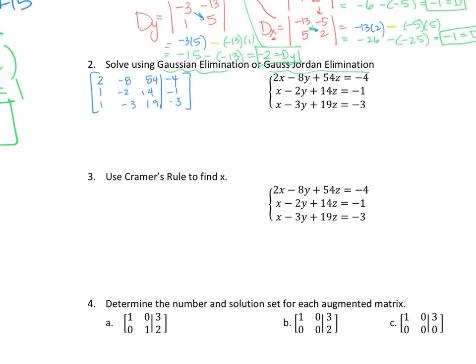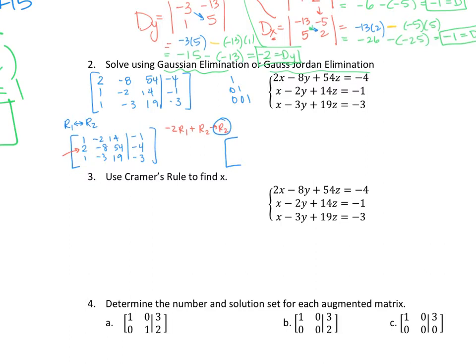My first goal is a diagonal of 1's with 0's below. I'll interchange row 1 and row 2, giving: 1, negative 2, 14, negative 1 in row 1; 2, negative 8, 54, negative 4 in row 2; and row 3 stays as 1, negative 3, 19, negative 3. Next I want to make that 2 a 0, so I take negative 2 times row 1 and add it to row 2. Scratch work: negative 2 times row 1 gives negative 2, 4, negative 28, 2; adding row 2 (2, negative 8, 54, negative 4) gives new row 2: 0, negative 4, 26, negative 2.